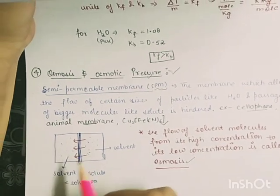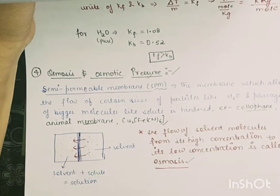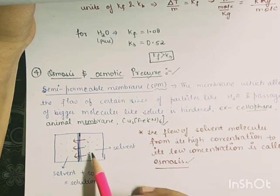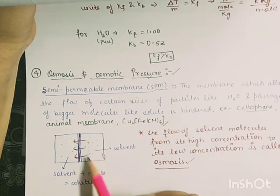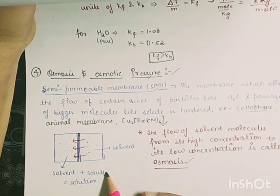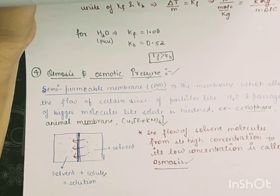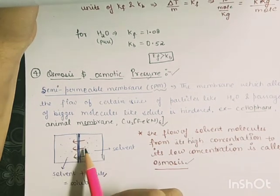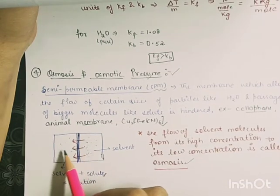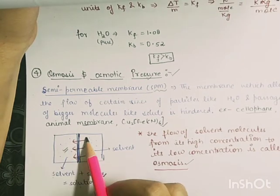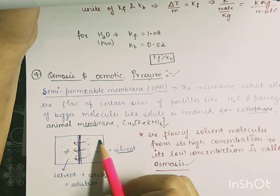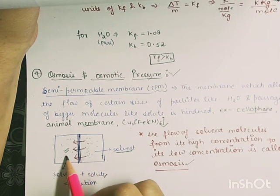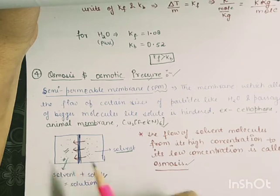What is osmosis? Consider a chamber or beaker separated into two parts by a semi-permeable membrane. On one side are pure solvent particles (water), and on the other side is a solution containing water plus a solute such as NaCl. Over time, water molecules will slowly start moving to the solution side. This process — where solvent molecules move from high concentration to low concentration — is called osmosis.